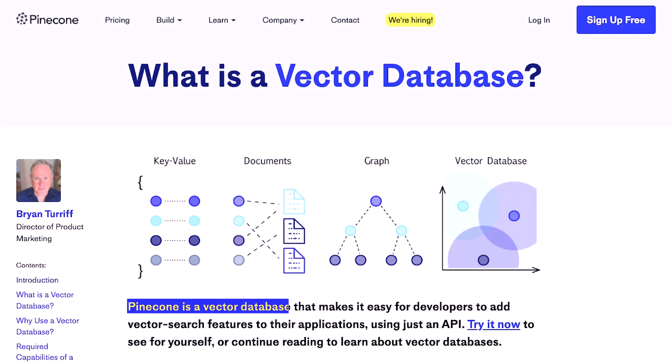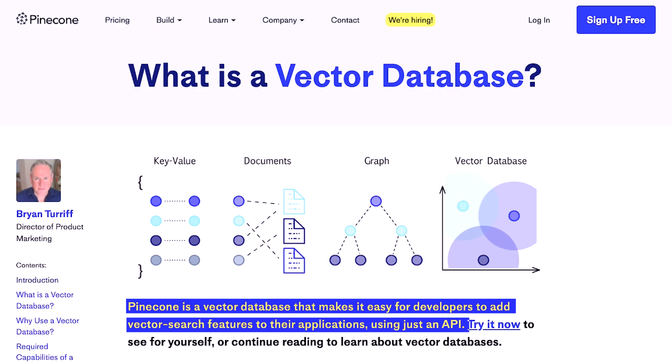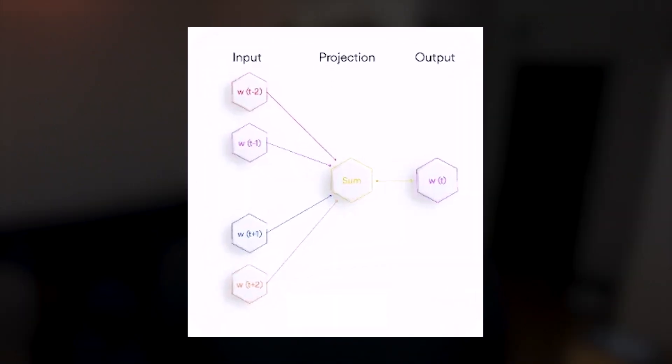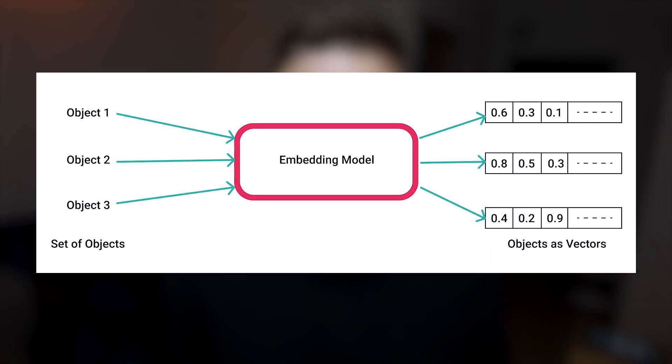First and foremost, vector databases are designed to organize your embeddings for efficient semantic similarity searches. Embeddings are numerical representations of your data, typically generated using large language models. These representations encode the meaning and context of your text into a specific sequence of numbers called vectors.